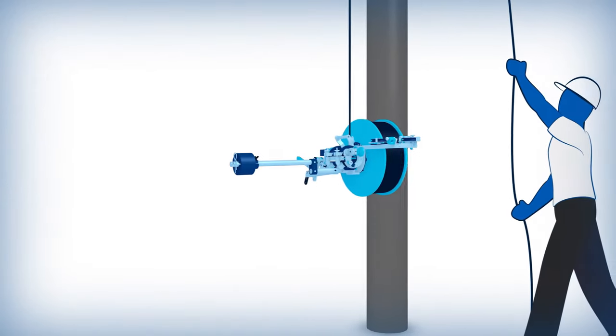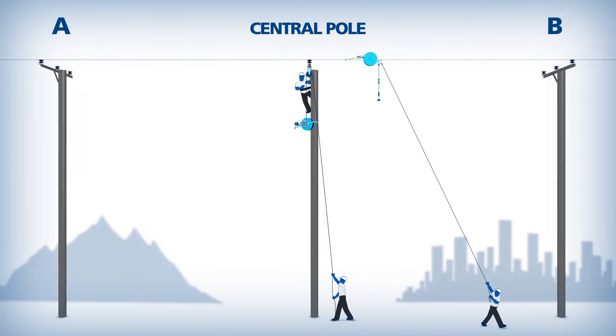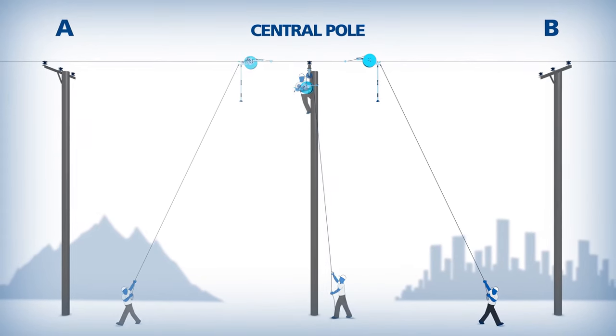Cable is supplied on a cassette which enables the installation to start from a central pole and is installed in both directions simultaneously.